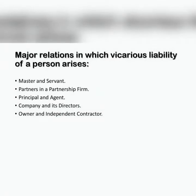The major relationships that constitute vicarious liability are: master and servant, partners in a partnership firm, principal and agent, company and its director, and owner and the independent contractor.